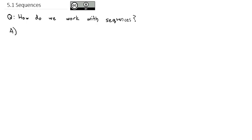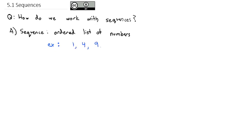What a sequence is is an ordered list of numbers. For example: 1, 4, 9, 16. We say the first number is 1, the second is 4, the third is 9, the fourth is 16. We usually label them: a sub 1 is the first number, a sub 2 is the second, a sub 3 is the third, a sub 4 is the fourth, and so on.